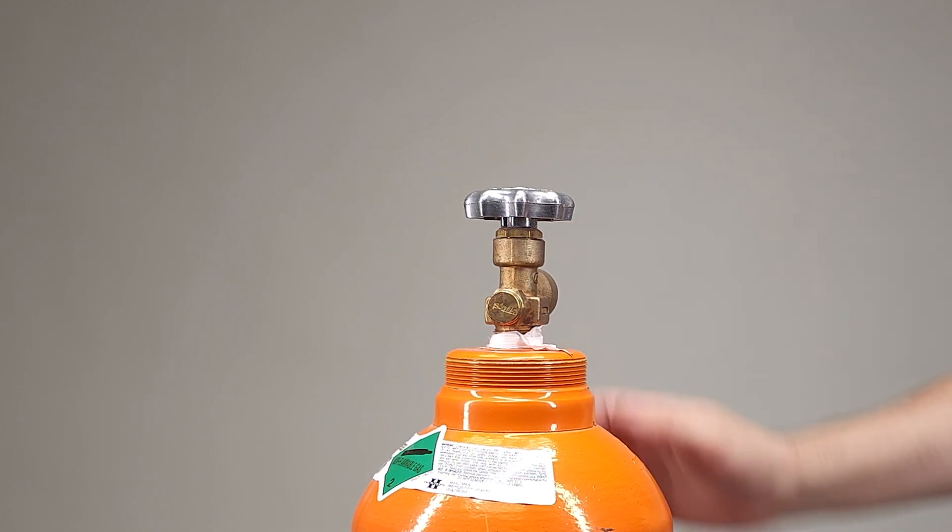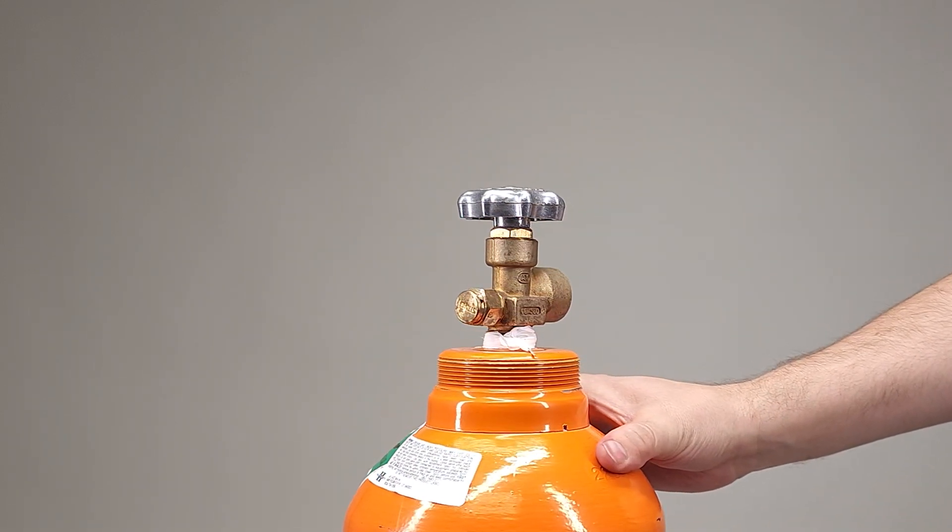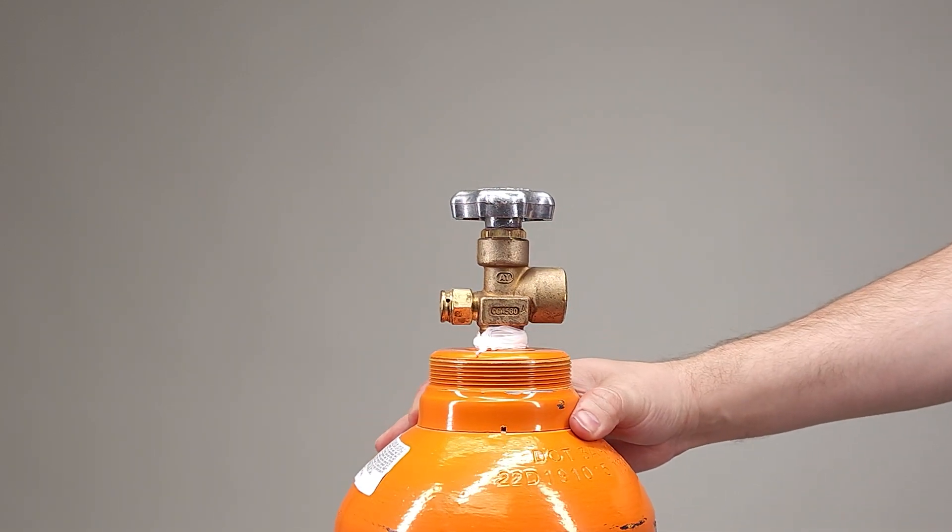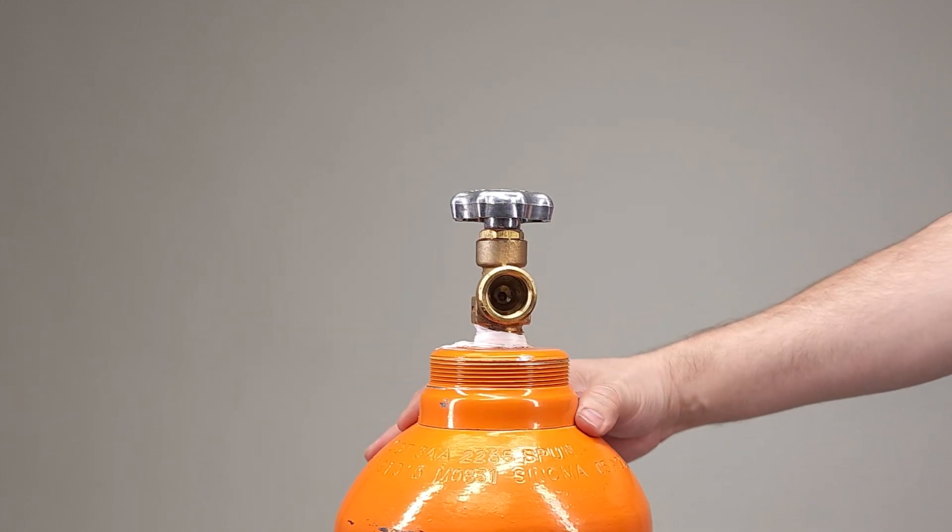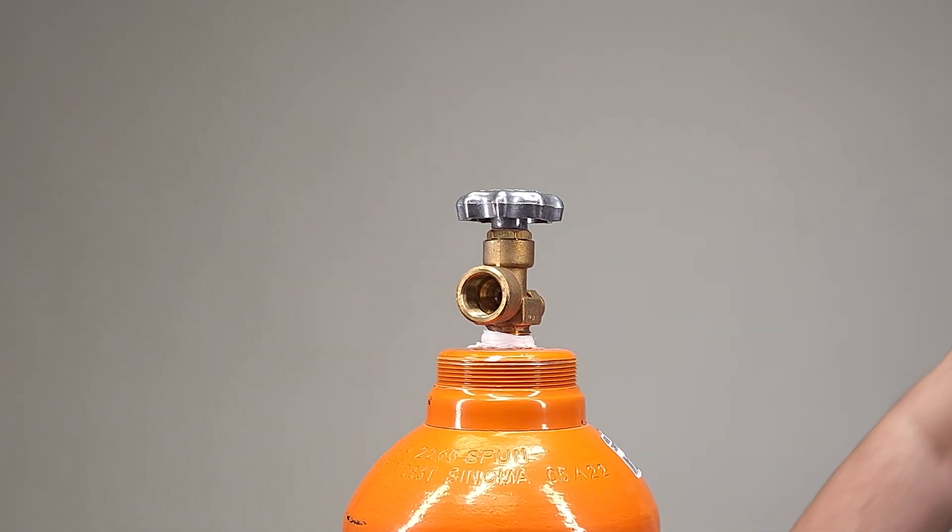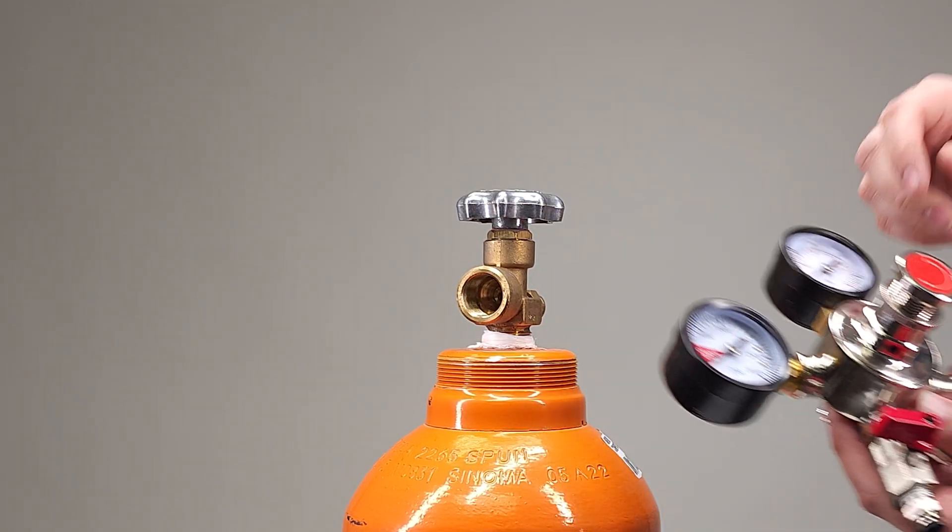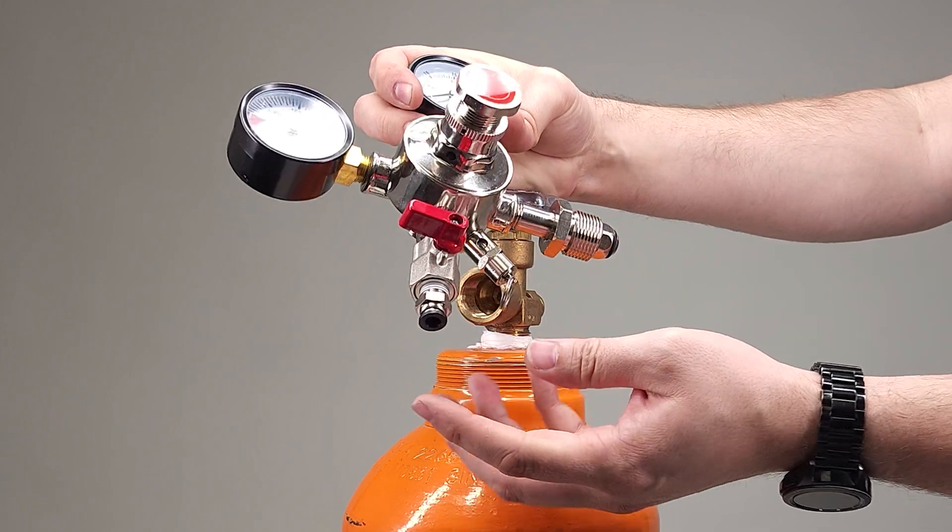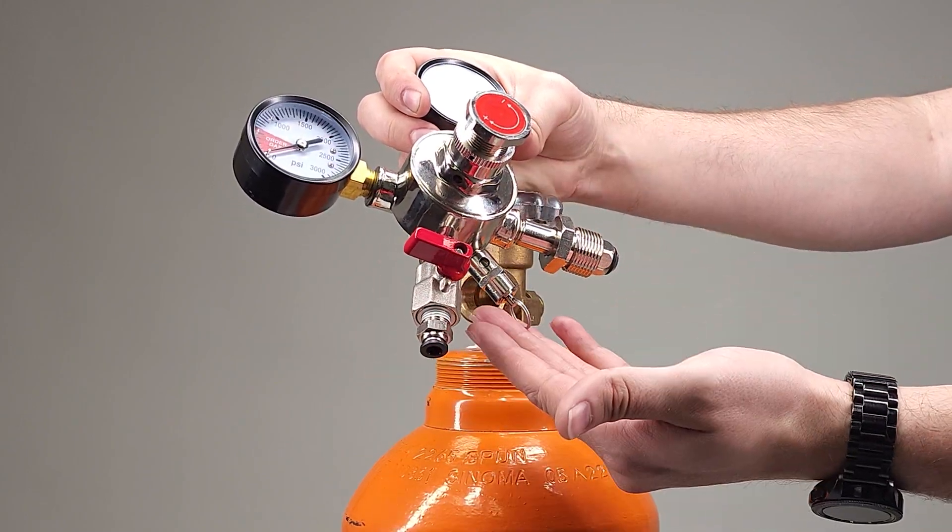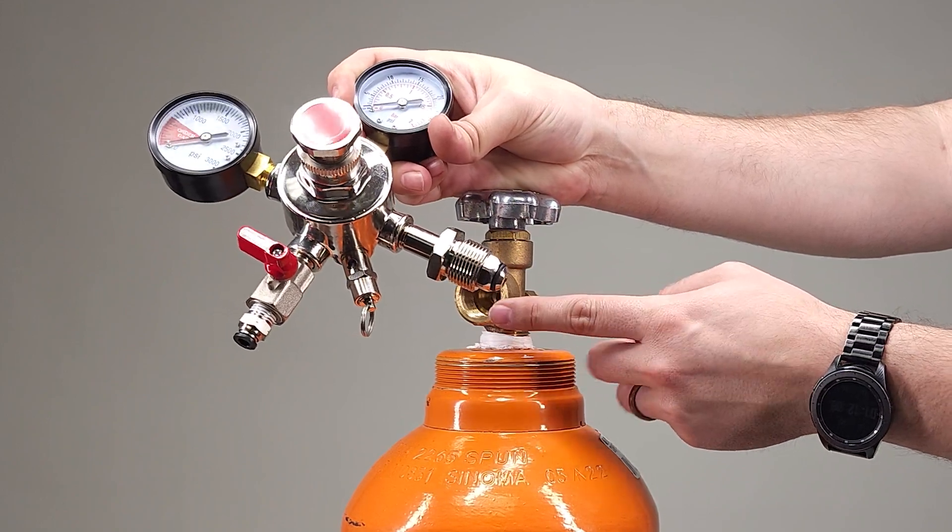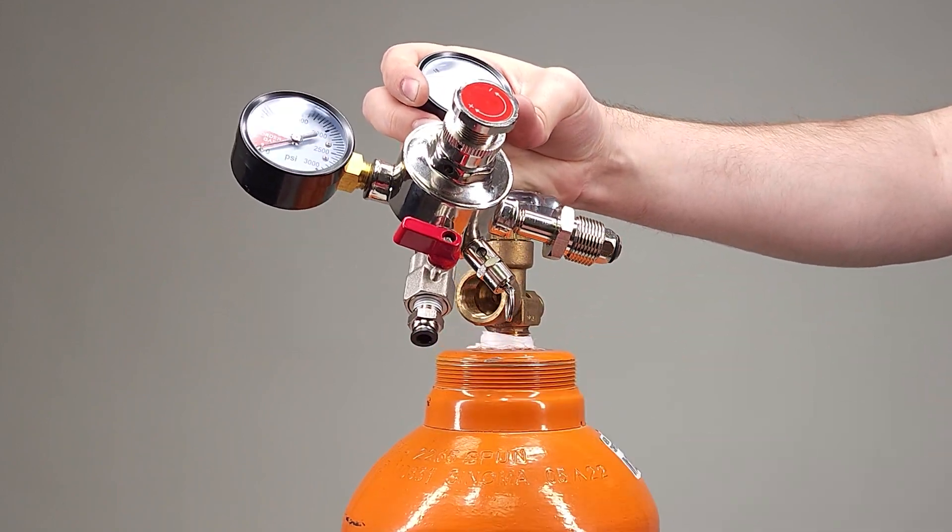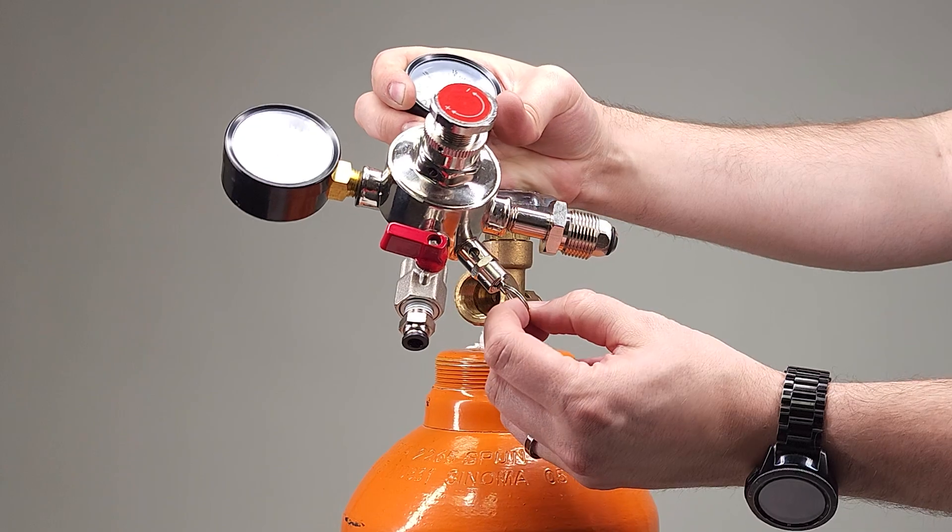So we're just exposing the parts that we're going to be dealing with today. The argon regulator has a bunch of business ends going on here. We have this end which is going to go into our tank here, this is what's leaving the tank, and this is a pressure relief valve.